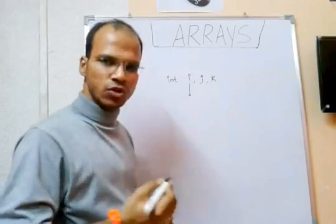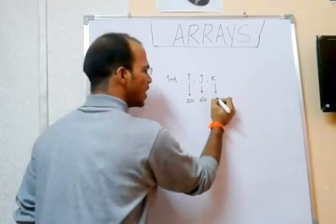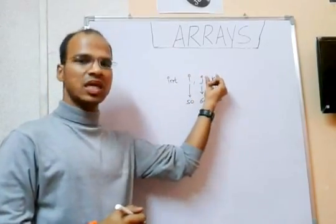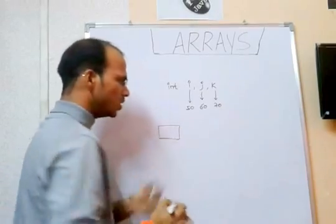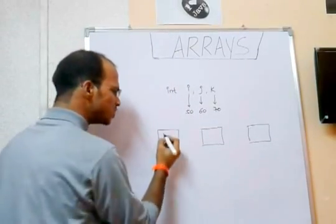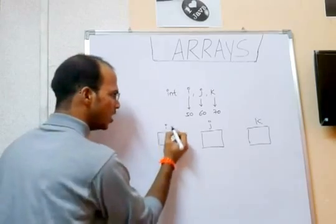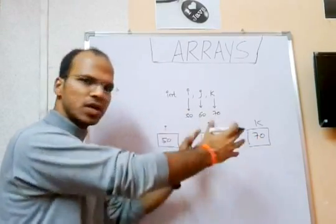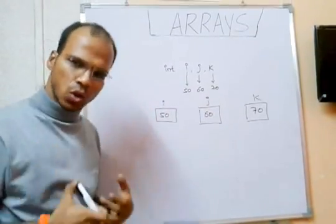Suppose I'm saving marks of a student: 50 in 'i', 60 in 'j', and 70 in 'k'. So 50 is saved in 'i', 60 in 'j', and 70 in 'k'. Now imagine this like a normal bus — this is one bus, this is a second bus, this is a third bus. This bus is named 'i', this bus is named 'j', this bus is named 'k'. Every bus has a different value: 'i' has 50, 'j' has 60, 'k' has 70. These are totally different buses storing integer values.